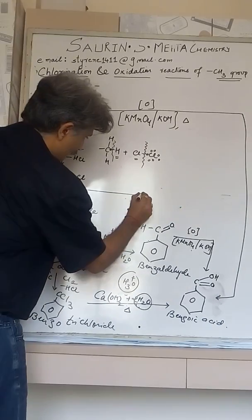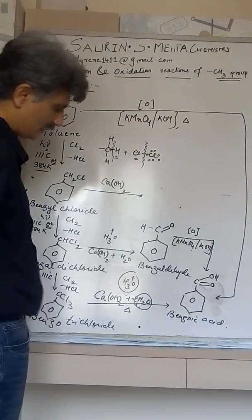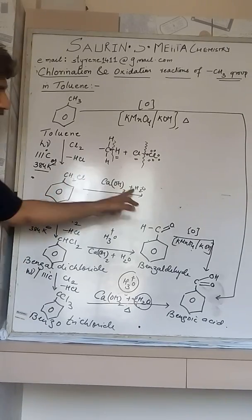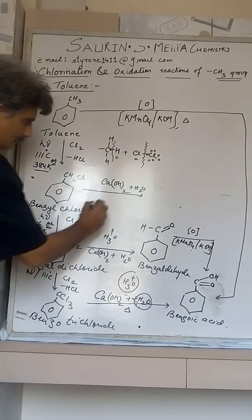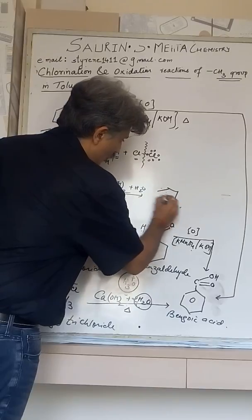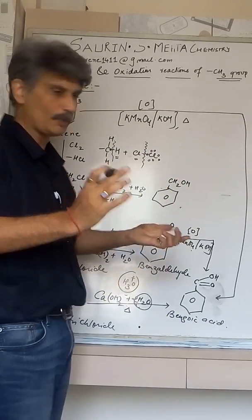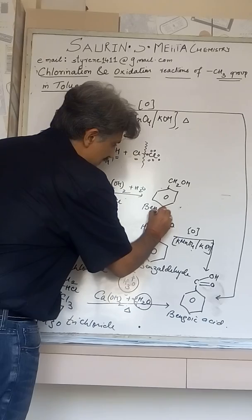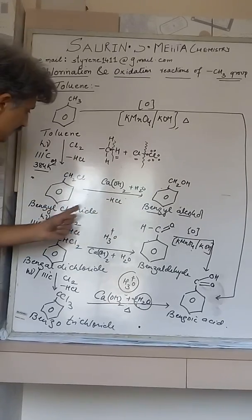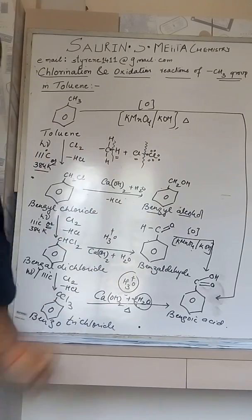One more reaction: benzyl chloride reacts with calcium hydroxide in presence of H2O. Cl and H are eliminated forming HCl, and OH takes the position on carbon, giving CH2OH on benzene — this compound is benzyl alcohol. The naming again correlates: benzyl + chloride = benzyl chloride; benzyl + OH = benzyl alcohol.